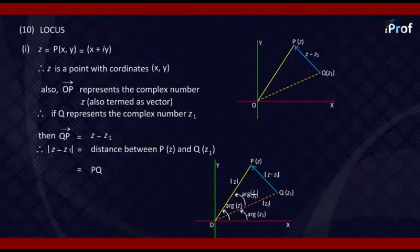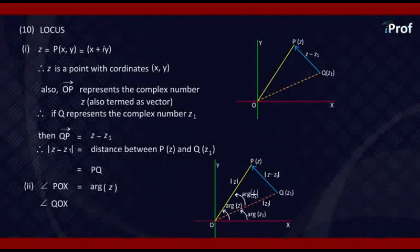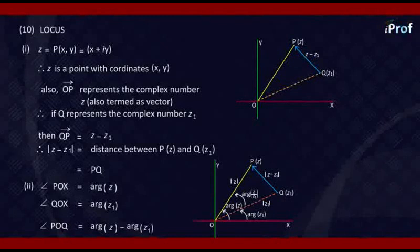We note here that angle POX equals the argument of z, and angle QOX represents the argument of z₁. Therefore, angle POQ equals arg(z) minus arg(z₁), which equals arg(z - z₁), which can also be written as arg(z/z₁).